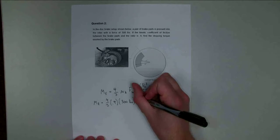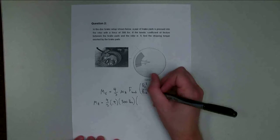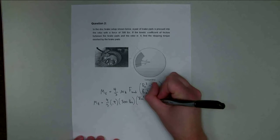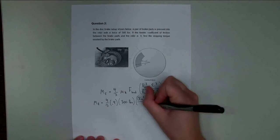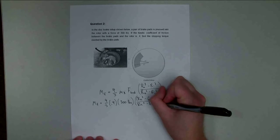Then we've got the radiuses. The outer radius is 8 inches and the inner radius is 6. So it's 8 inches cubed minus 6 inches cubed over 8 inches squared minus 6 inches squared.